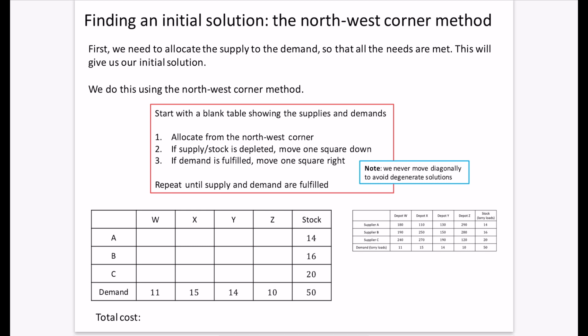Before we can make an improved solution, we need an initial solution. We allocate supply to demand so that all needs are met using the Northwest Corner Method, because we start up in the northwest. If the supply or stock is depleted, we move one square down. If the demand is fulfilled, we move one square right. We repeat this process until supply and demand are both fulfilled. We never move diagonally — only one right or one down — otherwise we get something called a degenerate solution.